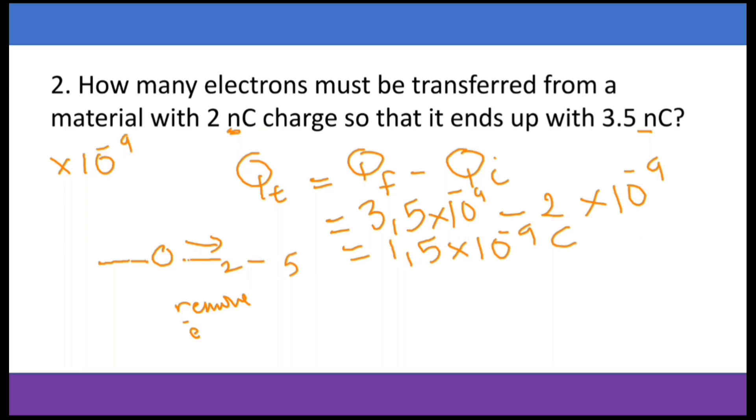Now we know the amount of charge that we need to remove. But the question says, how many electrons do we need? Now we know that the number of electrons is the amount of charge over the electronic charge, which is the 1.5 times 10 to the minus 9, all over 1.6 times 10 to the negative 19.